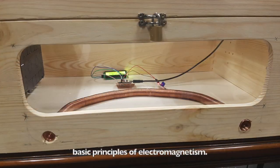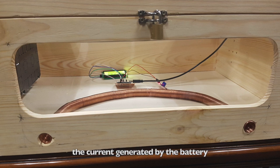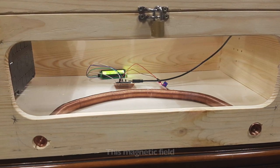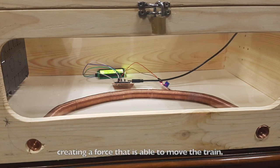The train relies on basic principles of electromagnetism. When it is inside the tunnel, the current generated by the battery flows in circles, producing a magnetic field. This magnetic field acts on the spherical magnets on both sides of the battery, creating a force that is able to move the train.